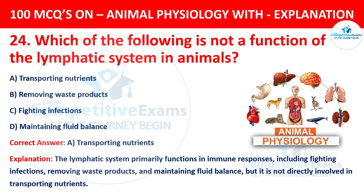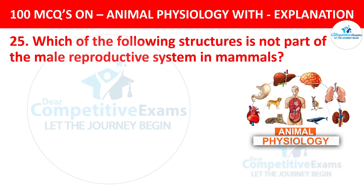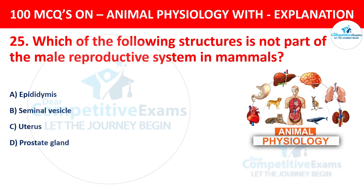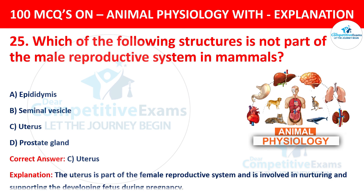Question number 25. Which of the following structures is not a part of the male reproductive system in mammals? The options are epididymis, seminal vesicles, uterus, or prostate gland. The correct answer is C, uterus. The uterus is a part of the female reproductive system and is involved in nurturing and supporting the developing fetus during pregnancy.